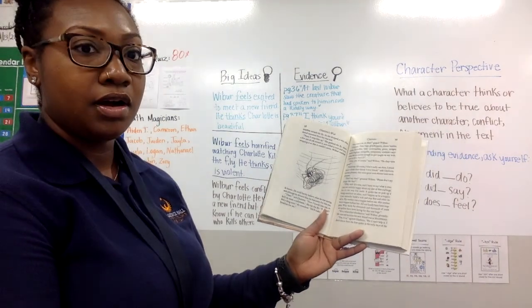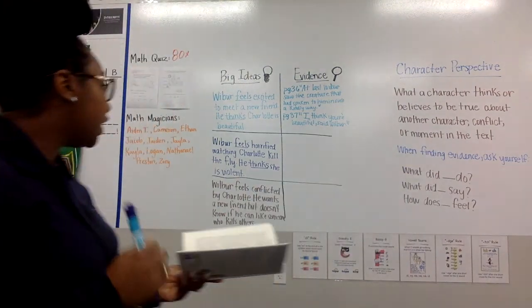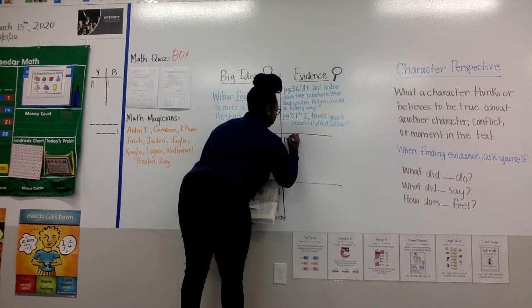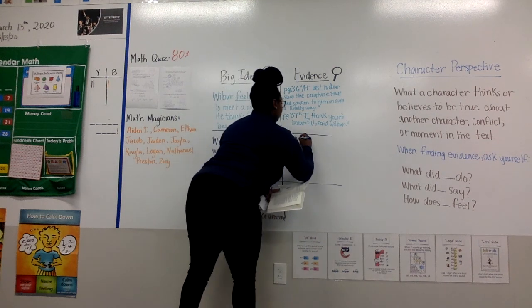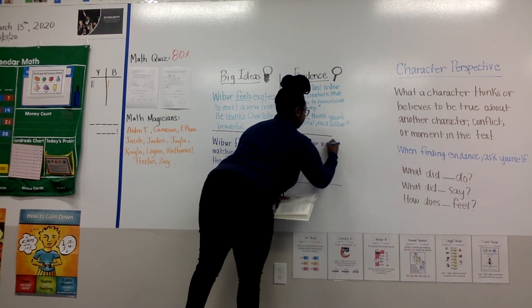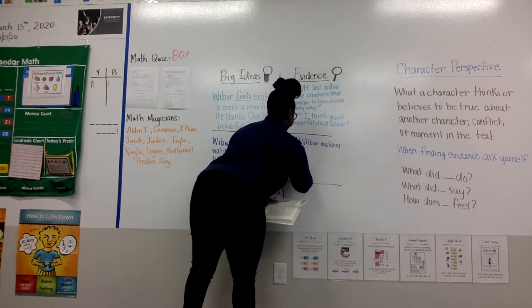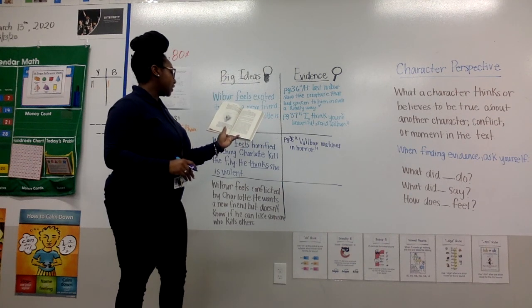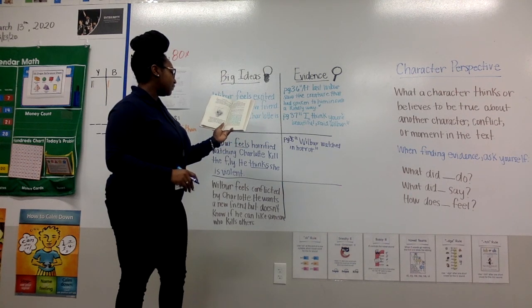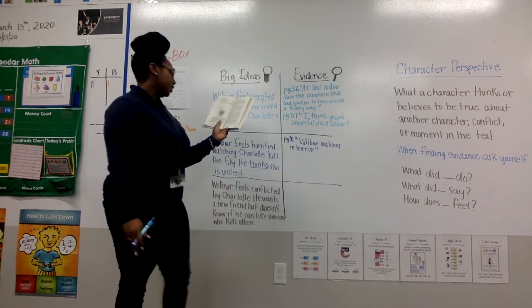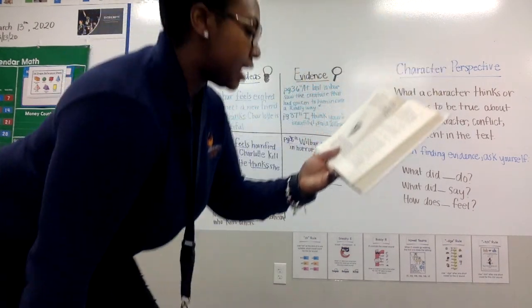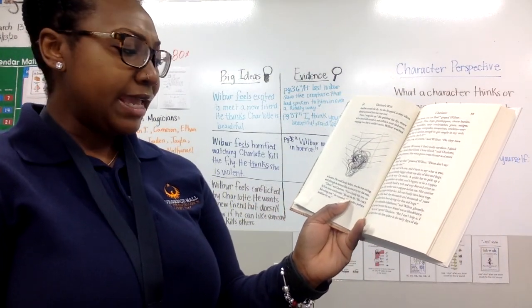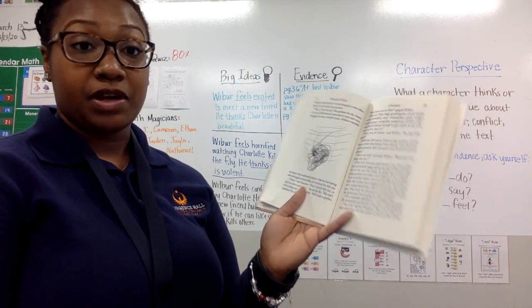Wilbur watched in horror. I found my first piece of evidence that talks about how Wilbur feels while he's watching Charlotte kill the fly. This is on page 38. Make sure that you put the page number and put your quotation marks. 'Wilbur watched in horror.' He could hardly believe what he was seeing. Although he detested flies — that means he doesn't like them — he was sorry for this one. 'There,' said Charlotte. 'Now I knock him out so he'll be more comfortable.' She bit the fly. 'He can't feel a thing now,' she remarked. 'He'll make a perfect breakfast for me.'